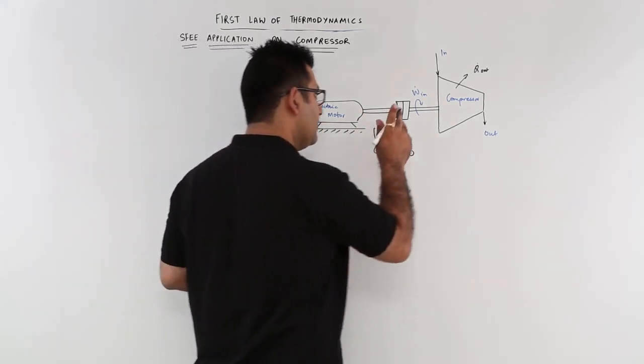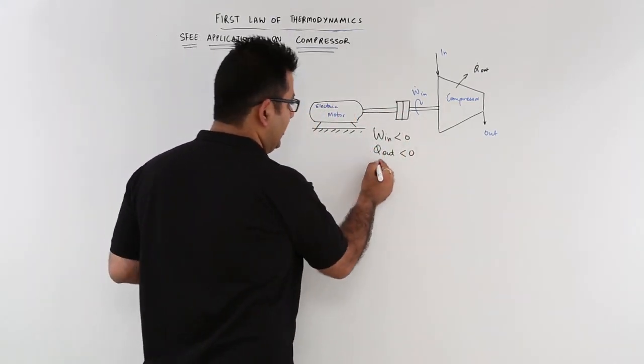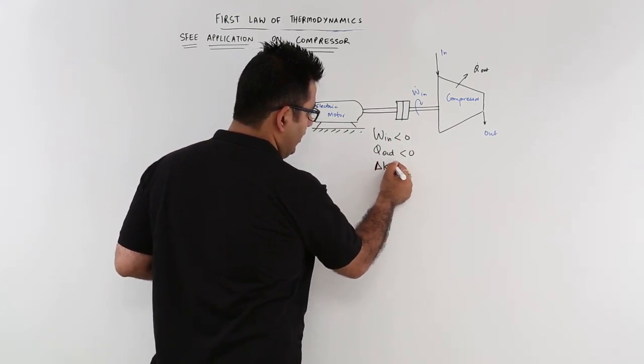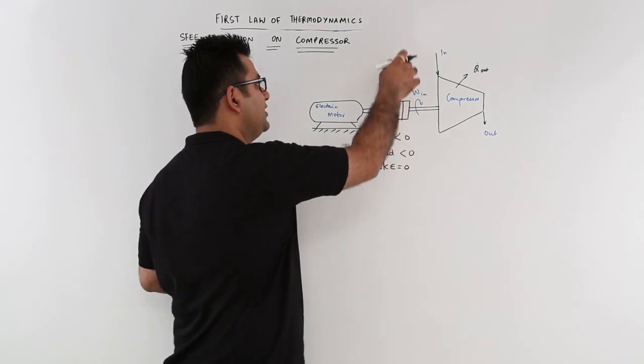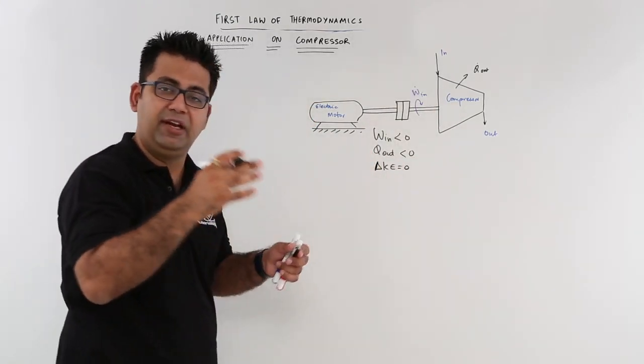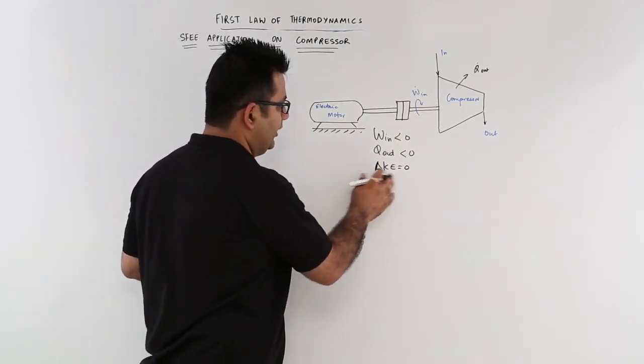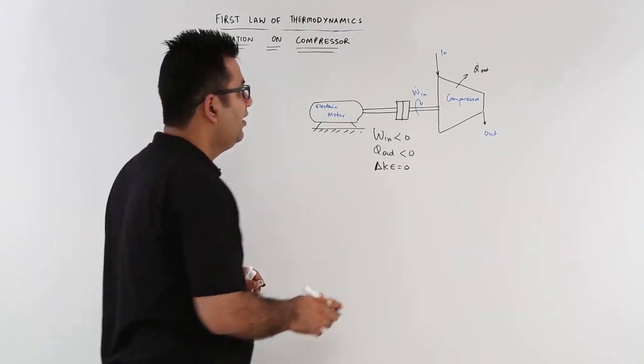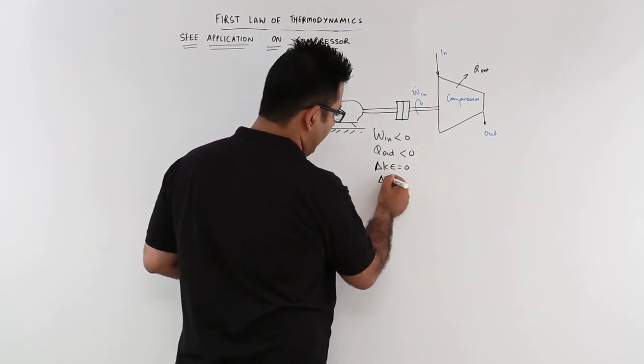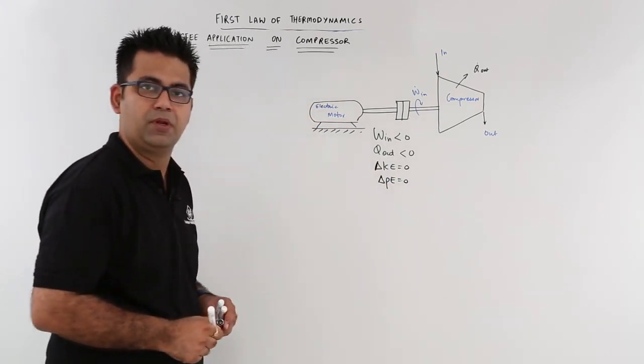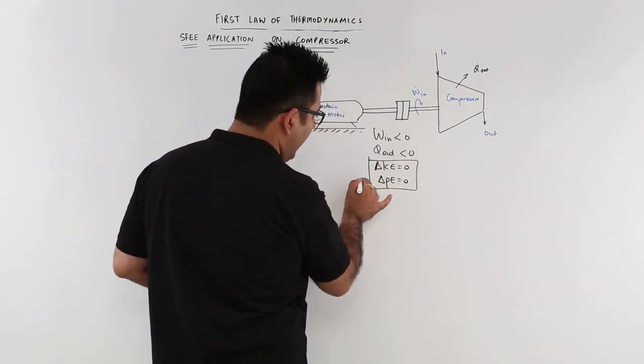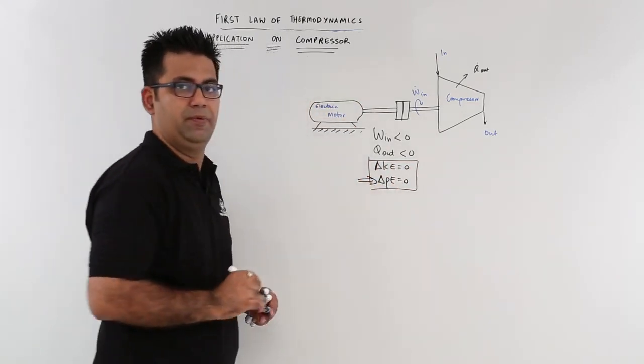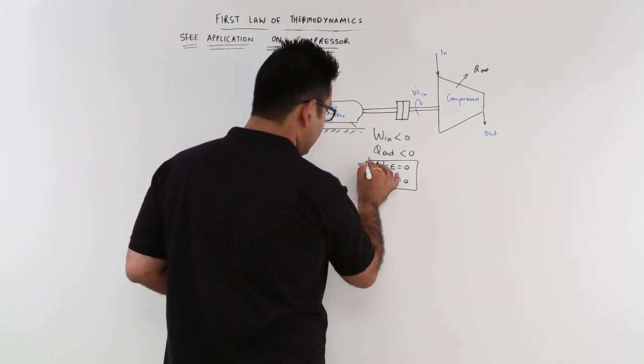Now in this, the assumption is that the kinetic energy delta is almost zero. The velocities at inlet and outlet have very small difference, so delta KE is almost zero. We can also assume that delta PE is zero. Earlier you only had the PE assumption, but this time you have the KE assumption as well.